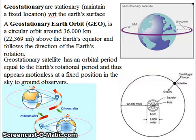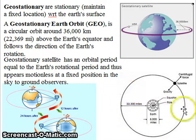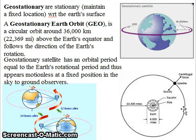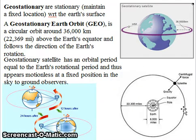Geostationary satellites, as the name indicates, are stationary — they maintain a fixed location above the surface of the earth. A geostationary earth orbit is a circular orbit at a height of 36,000 kilometers above the earth's equator, and the satellite's movement follows the direction of the earth's rotation. These satellites have an orbital period equal to the earth's rotational period, and that's why they appear motionless at a fixed position in the sky to ground observers.